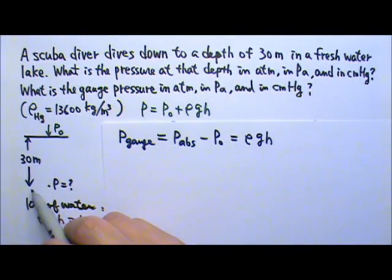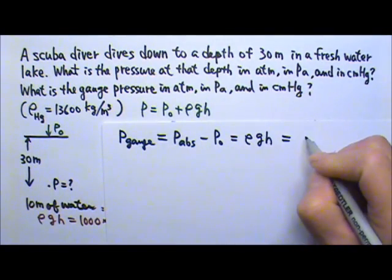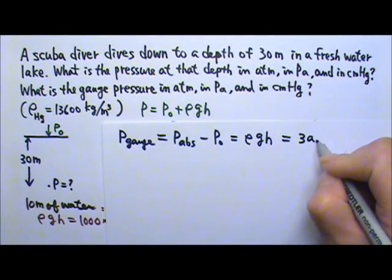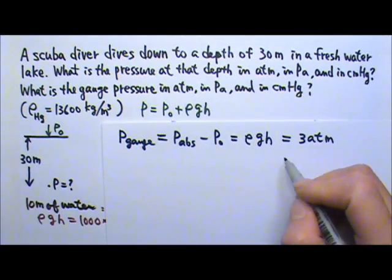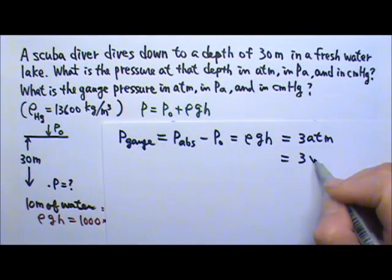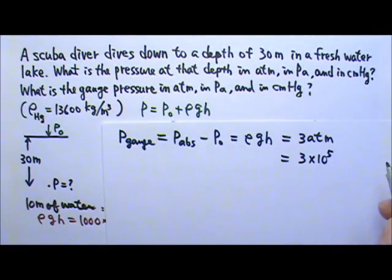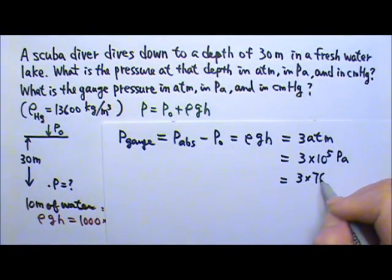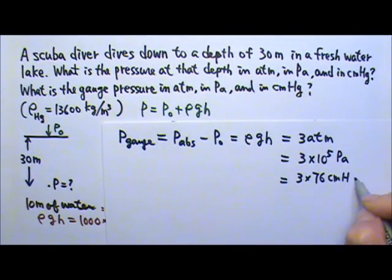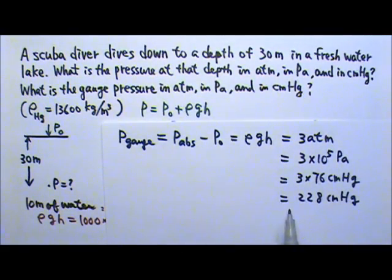Since we have 30 meters of water, that means we are going to get 3 atmospheres because every 10 meters of water is 1 atmosphere. And 1 atmosphere is 10⁵ pascals, so this is 3 times 10⁵ pascals. And we also know that 1 atmosphere is 76 centimeters of mercury, so this will give us 228 centimeters of mercury. So these are the gauge pressures at 30 meter depth in these various units.